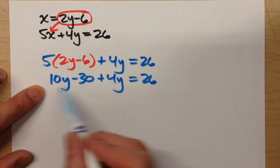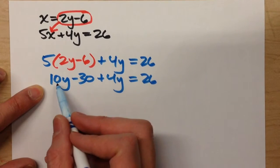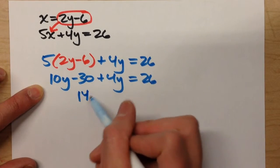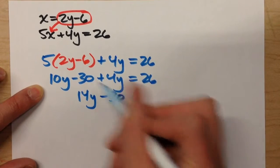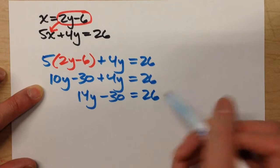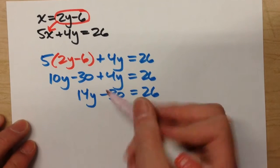I've got y's on the same side, so I'm going to group them together. 10y plus 4y is 14y minus 30 is still there, equals 26. Now I can solve this.